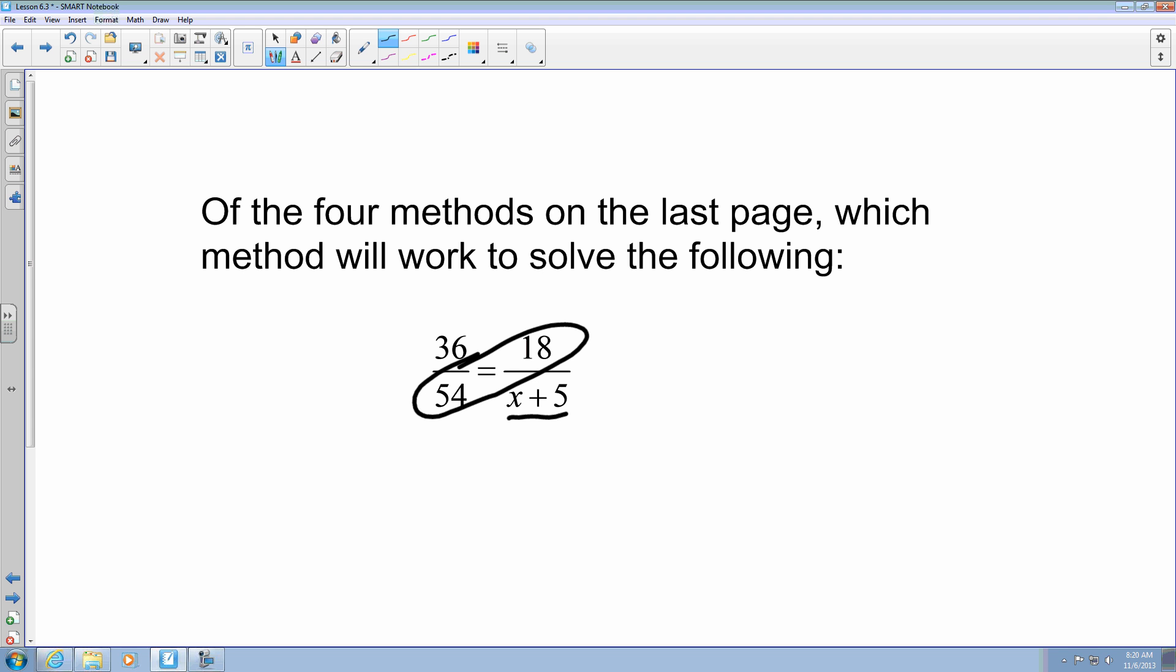We're still going to take 54 and multiply it by 18, which gives me 972. Again, this is from taking 54 and multiplying it by 18. And we're going to make it into an equation, so we're going to equals, and then we're going to use the distributive property from this multiplication sign. So I'm going to take 36, and I'm going to multiply it by x plus 5.